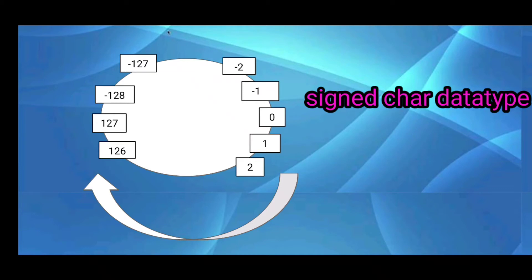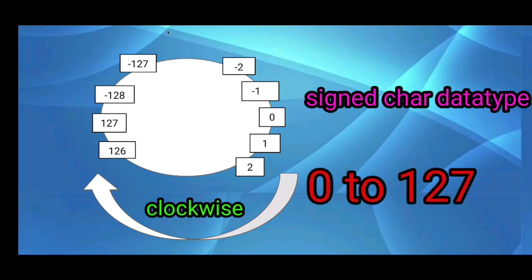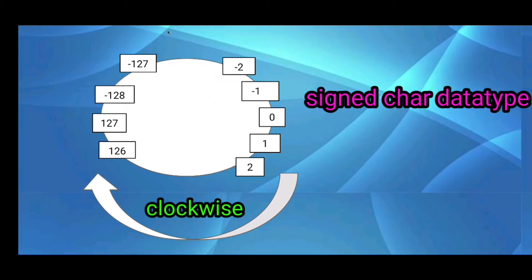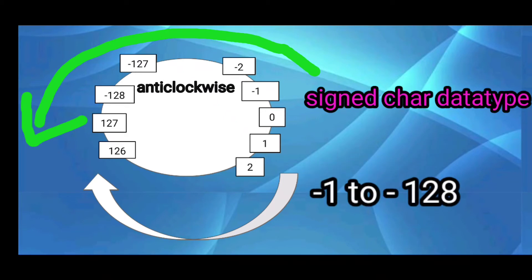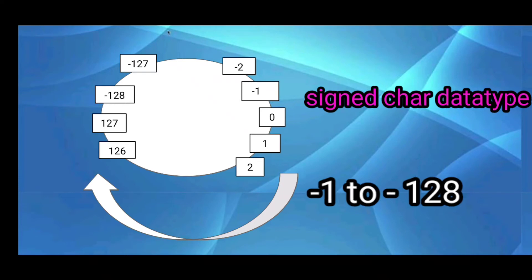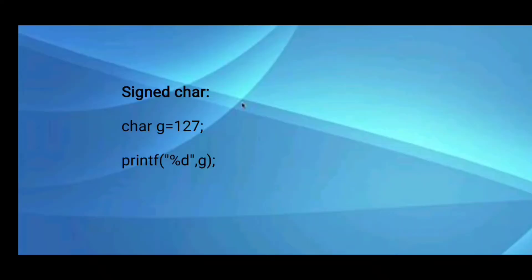The cyclic nature of signed char: positive values are stored in a clockwise direction from minimum value 0 to maximum value 127, so totally 128 values (0 is also taken as a positive value). Negative values are stored in an anti-clockwise direction starting from minus 1 to minus 128, so totally 128 negative values.